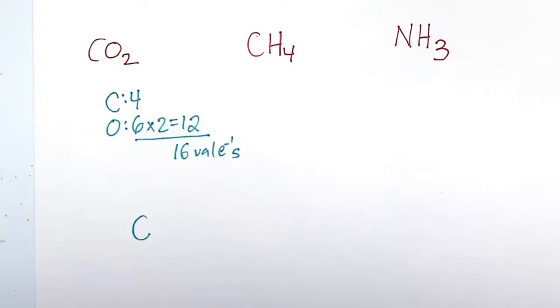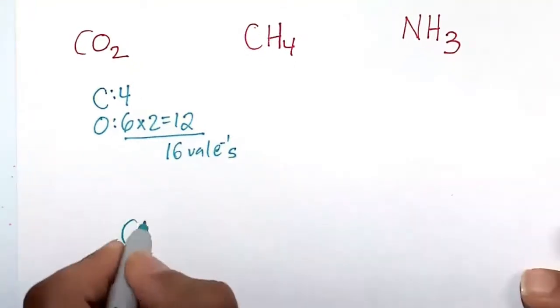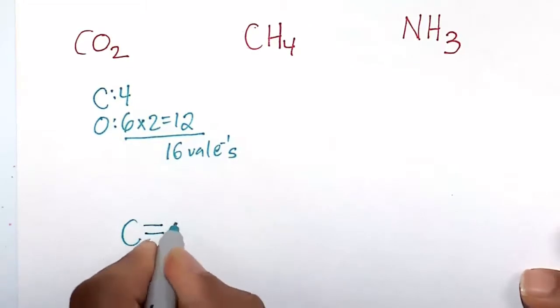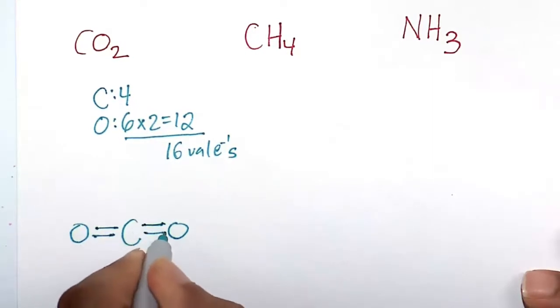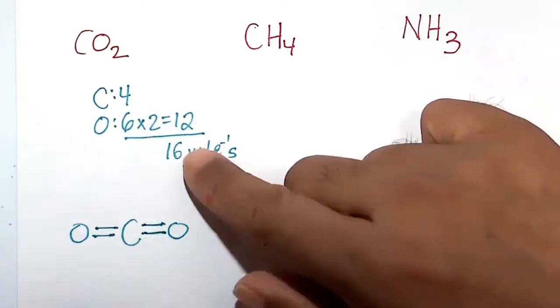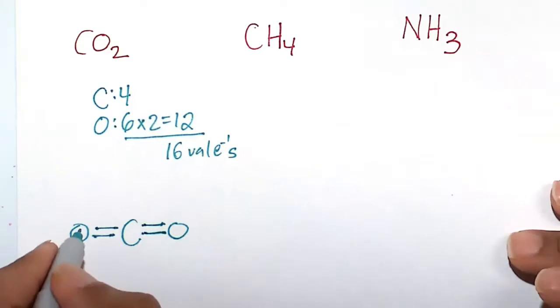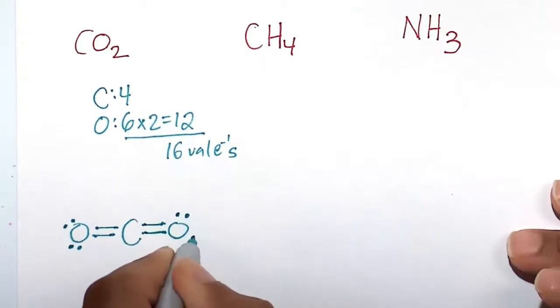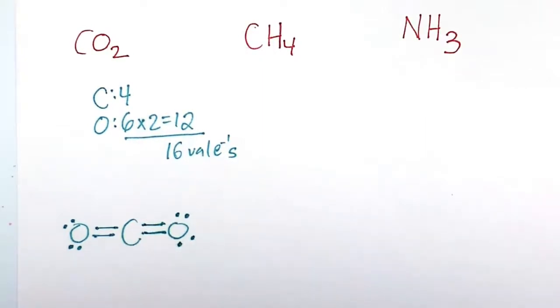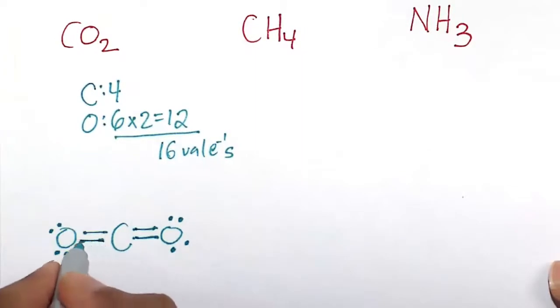Well, you can get 4 around carbon by constructing a double bond. So we're going to have a double bond to this oxygen here, and then we'll do the same thing on the other side. A double bond to the oxygen. So 1, 2, 3, 4, 5, 6, 7, 8. We need 16 valence electrons. We already got 8. 9, 10, 11, 12, 13, 14, 15, 16. So that is the correct representation for the structure of carbon dioxide.